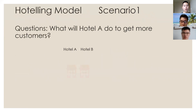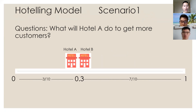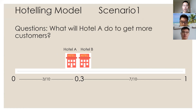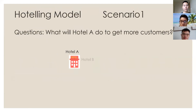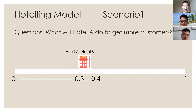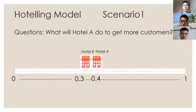Here comes the question. The two hotels are back in scenario one — hotel A and hotel B are located at the same point of 0.3. What will hotel A do to get more customers? Danny, do you want to try? Danny answers: I'll move to the right of hotel B so I can get more customers on the right side of the street. Yes, that's correct. If we move hotel A to the right side of hotel B, that is the opposite of the previous situation — hotel A gets a larger proportion of customers on the right side, and hotel B has a limited proportion on the left side.